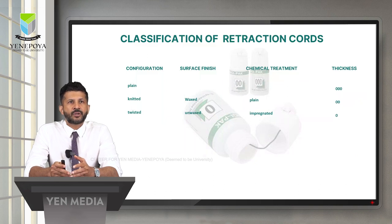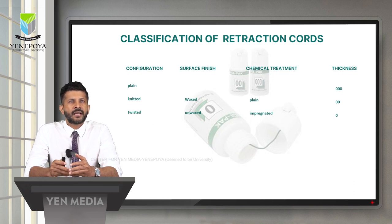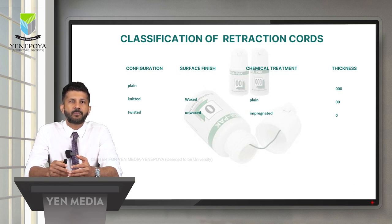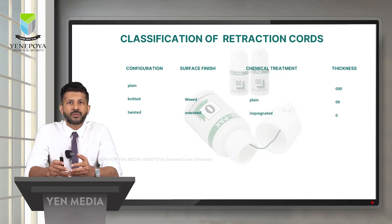Retraction cords can be classified according to their configuration as plain, knitted, or twisted; according to the surface finish as waxed or unwaxed; according to the chemical treatment as plain or impregnated; and according to their thickness as triple zero, double zero, or zero — triple zero being the thinnest and zero being the thickest.